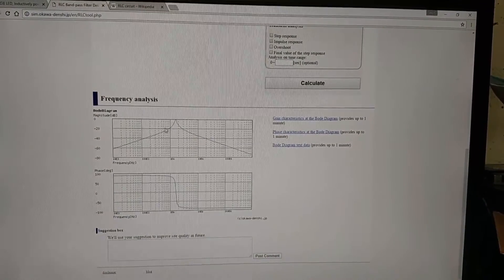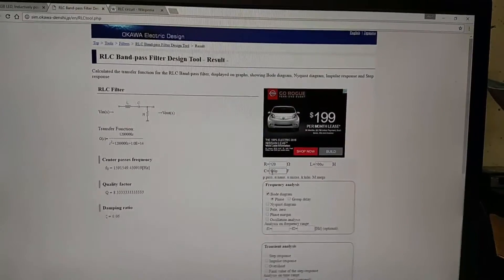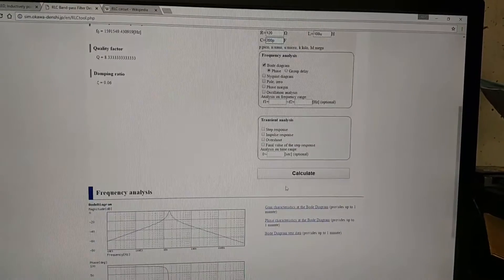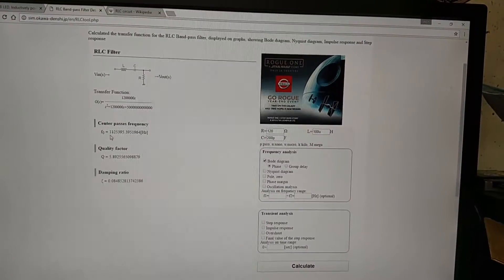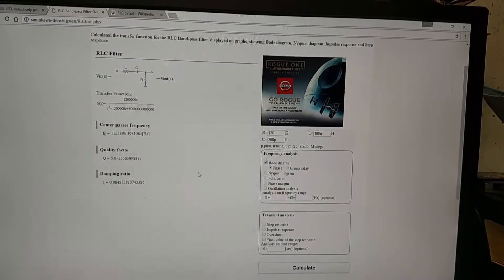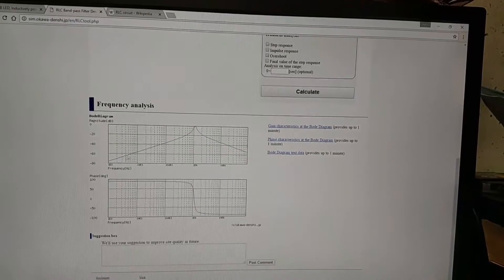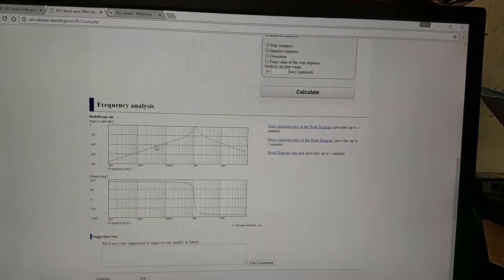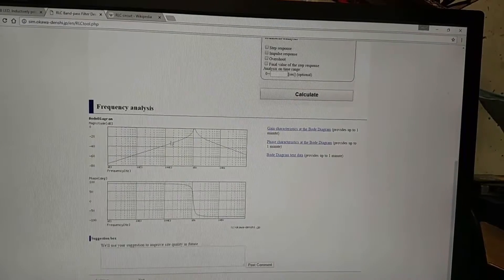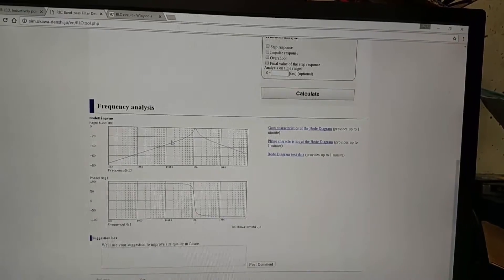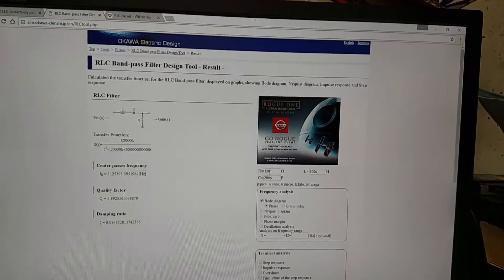If we change this to 200 picofarads and calculate, now it puts our center frequency at 1.12 megahertz. The peak moved over here. If you imagine that other peak came up here, there's a little bit of cross fading involved, but if you target the exact frequency you can get the ones you want. There's enough separation there.